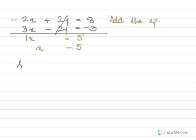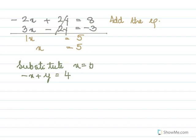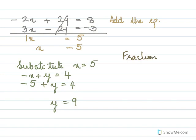To find y, substitute x equal to 5 into equation 1: minus 5 plus y equal to 4, so y equal to 9. The fraction is x over y — numerator is 5 and denominator is 9, so the fraction is 5 over 9.